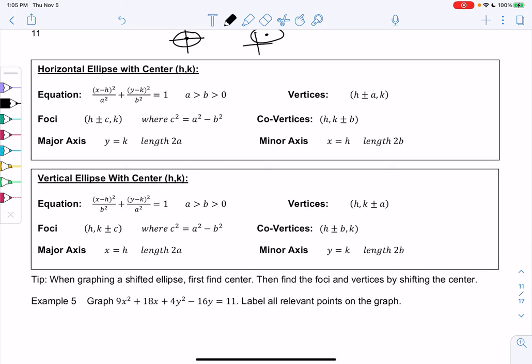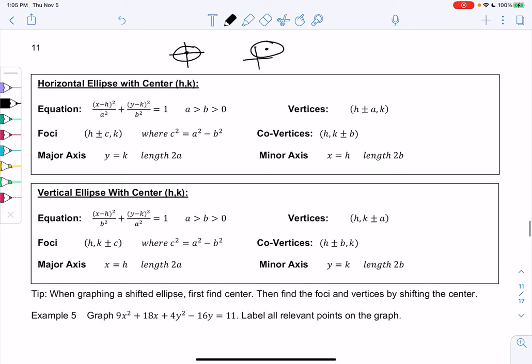We'll start with horizontal. That means the A is bigger for X, the X axis is longer. So these are the sideways ones. It shifts to a center of HK, and you can see that in the formula.